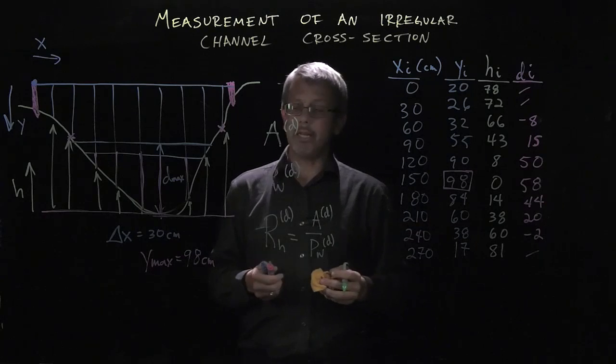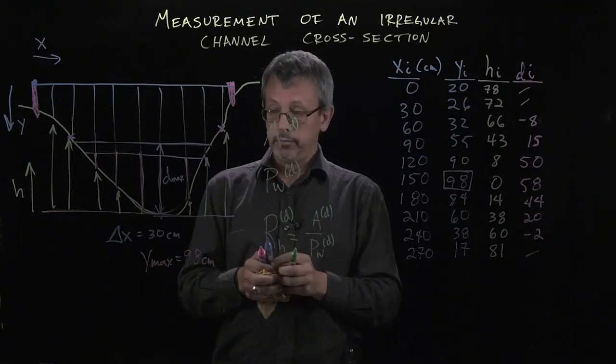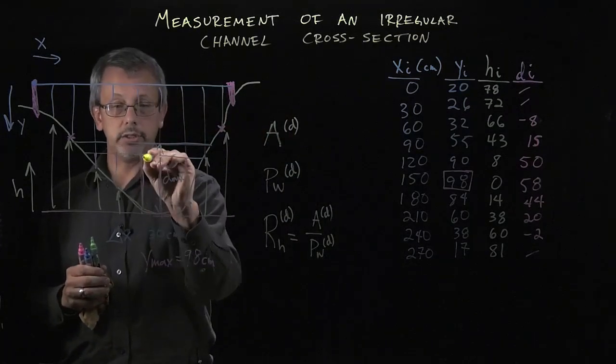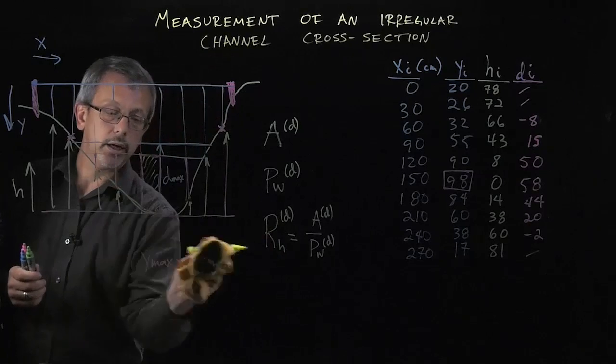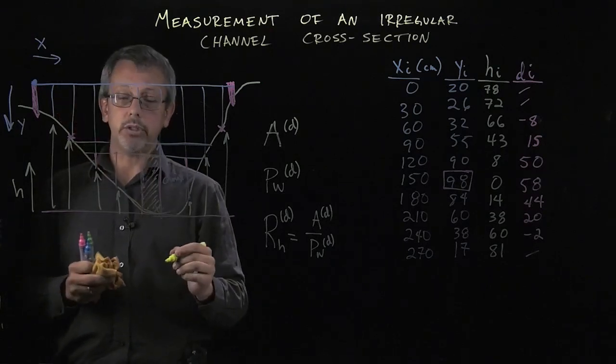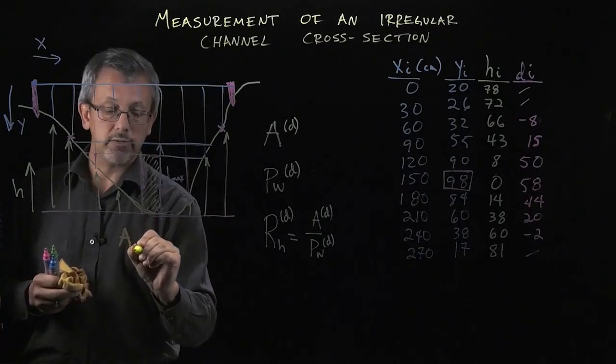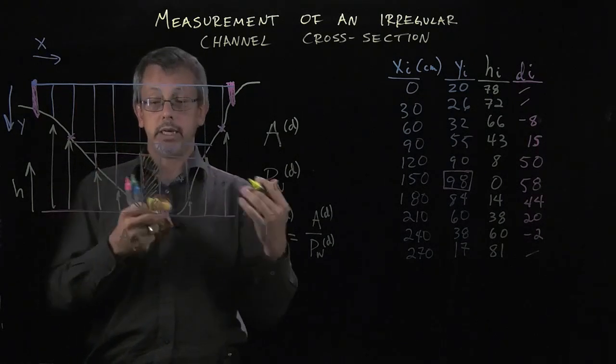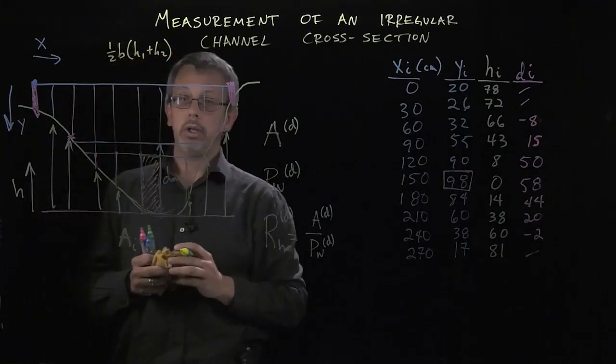So how do we go about calculating these things? How do we find the area? How do we find the wetted perimeter? Well, for the area, there's a relatively simple process that we can do here. We can look at each of these chunks and recognize that any particular piece here, any particular slice between two of these measurements, can be approximated using a trapezoid. We can take the area of a trapezoid, so one of my little pieces of area here we're going to approximate with the area of a trapezoid, which is one-half base times height one plus height two.